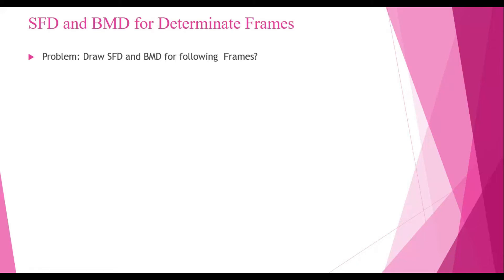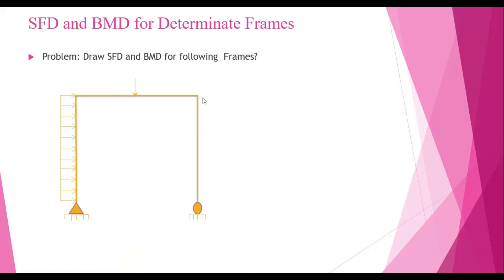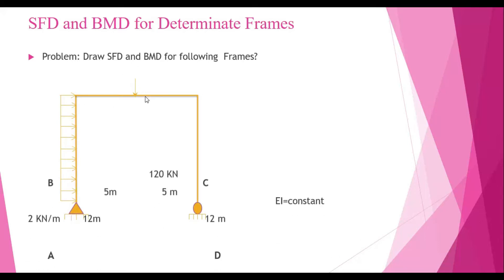So how we can draw the shear force and bending moment diagrams for frames — consider an example in which there is a hinge support and a roller support on the columns of this frame. There is a UDL of 2 kN per meter in the horizontal direction, a point load of 120 kN on the beam. Portion AB has a length of 12 meters, portion BC has a length of 10 meters, portion CD is 12 meters, and EI is constant.